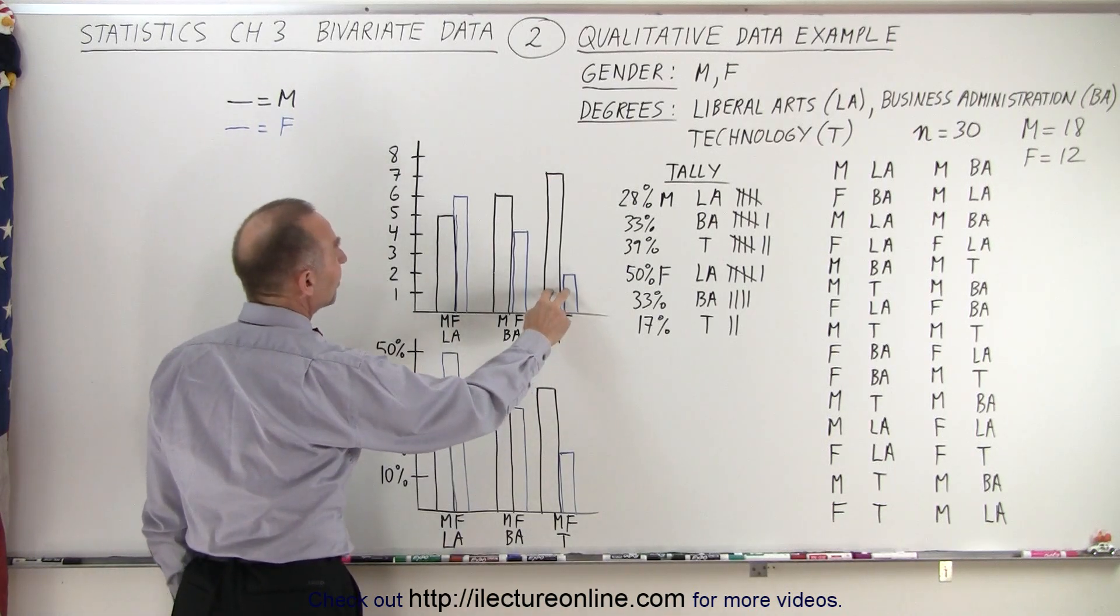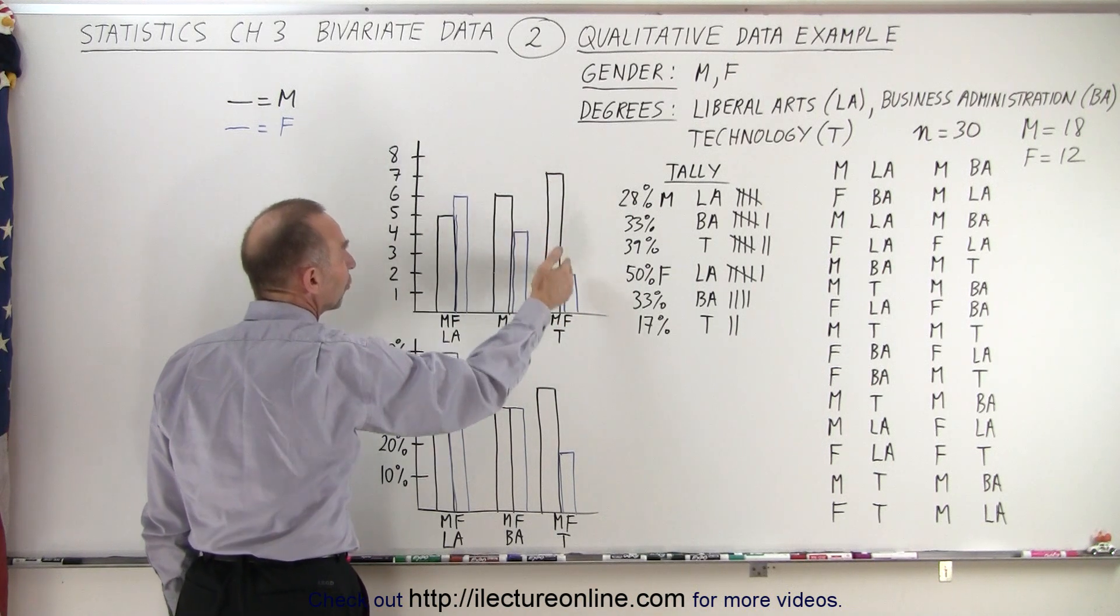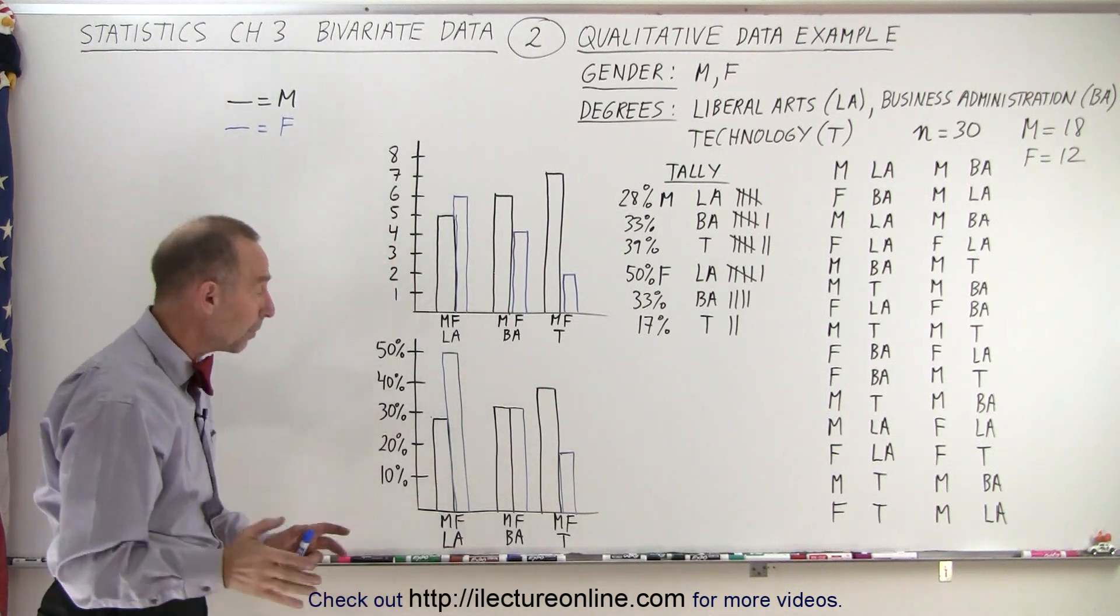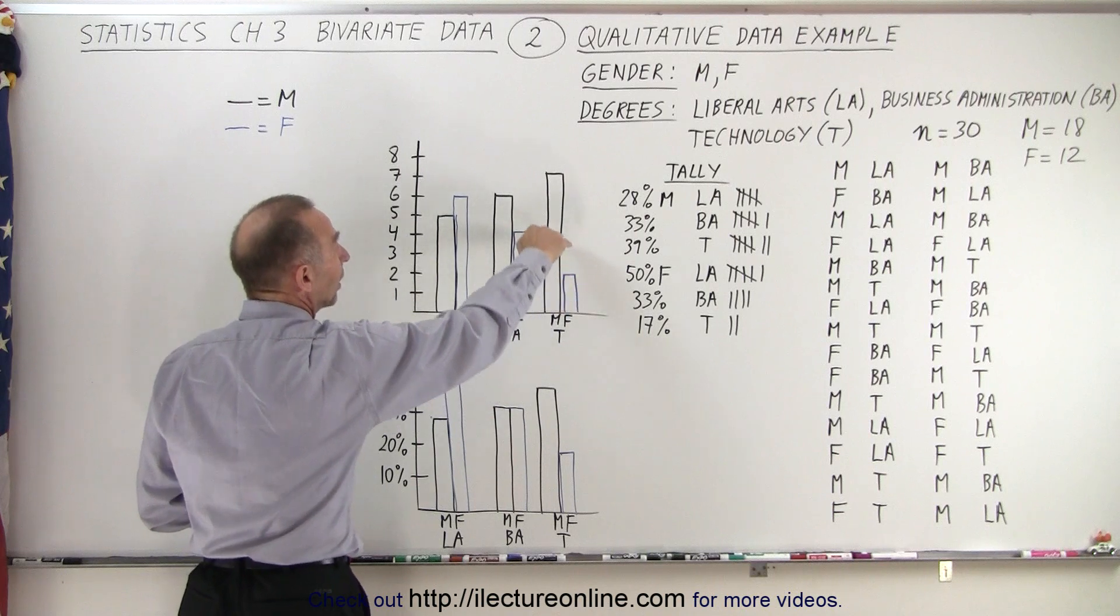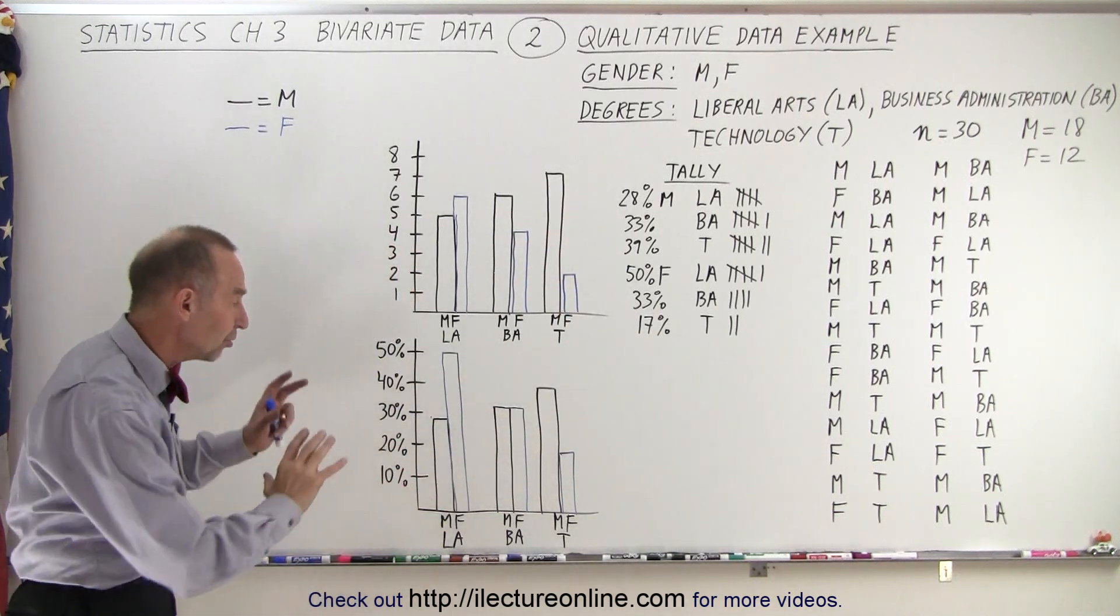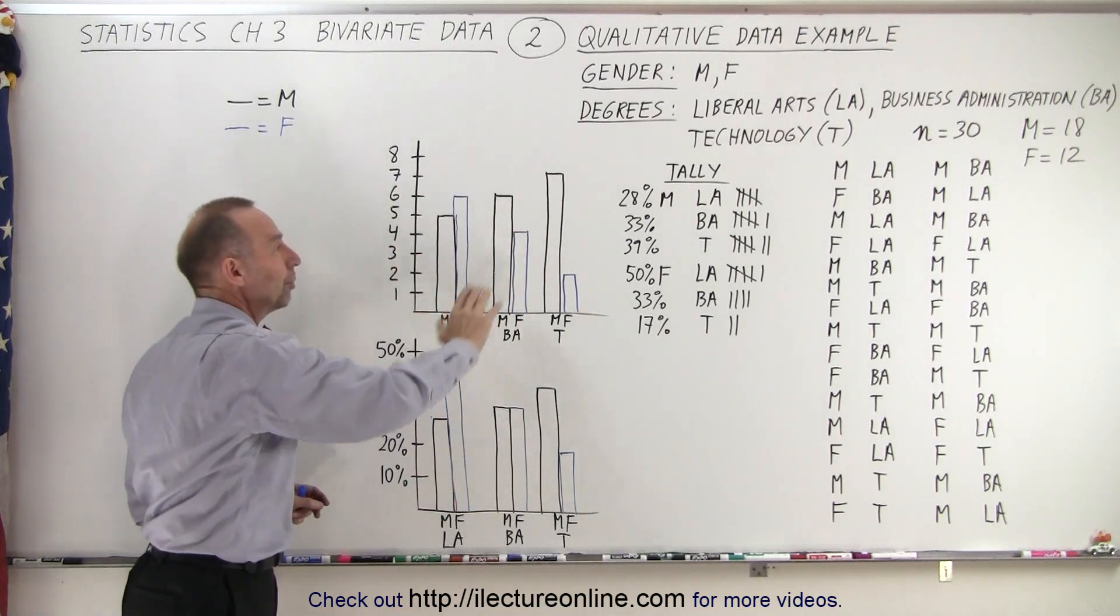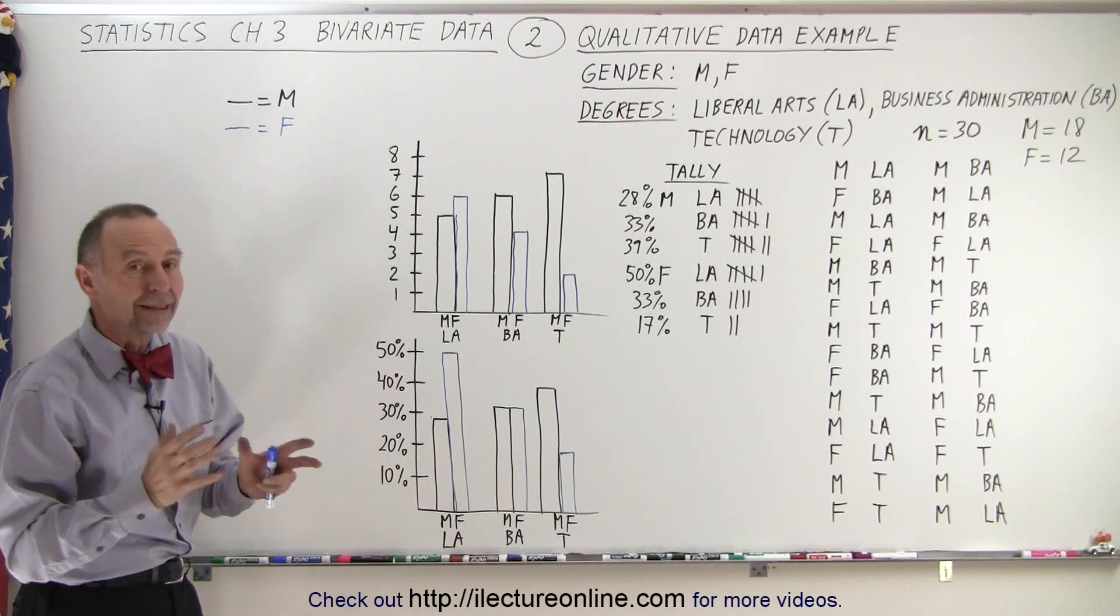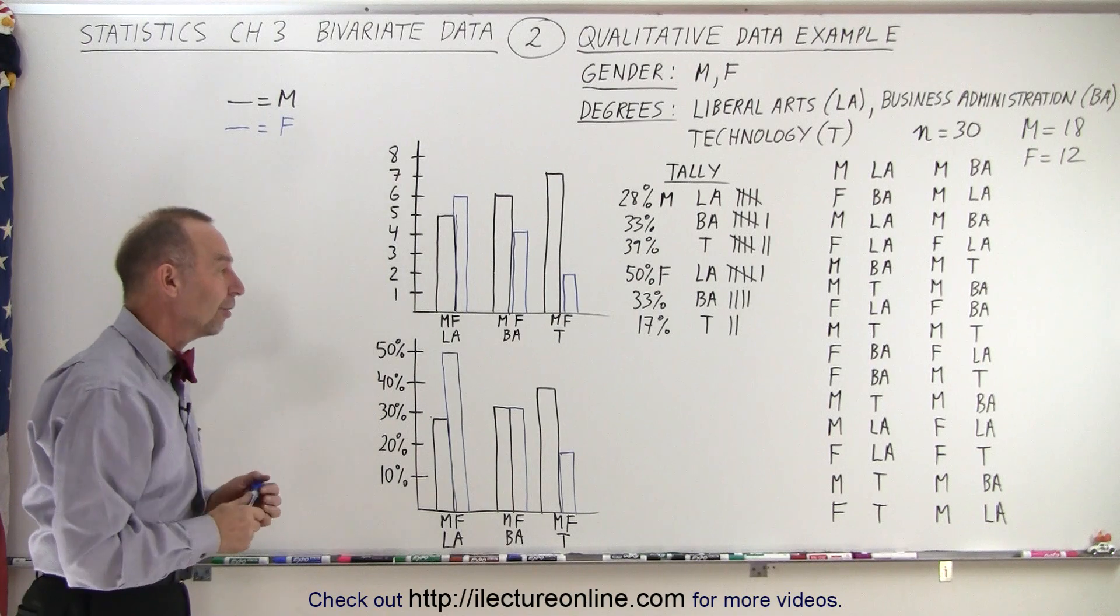And notice that it seemed that there was an overwhelming difference between Technology degrees for male students versus female students. When we do it as a percentage of the population, the difference wasn't quite as big. Here was more like a 1 to 3, here's more of 1 to 2. So it gives you a very different picture when you graph it as a percentage versus as a total number, especially if the number of female and male students are not represented the same way in our sample.